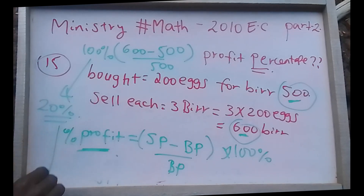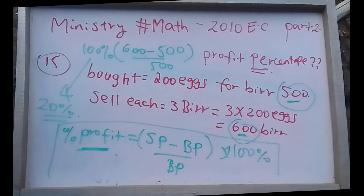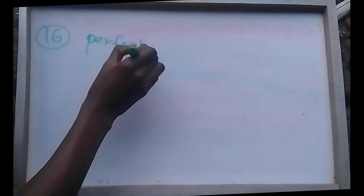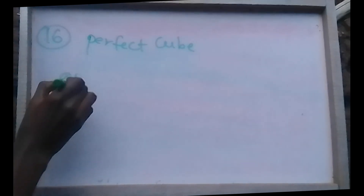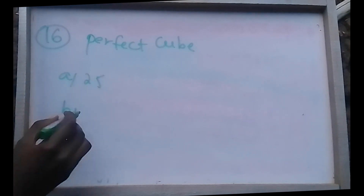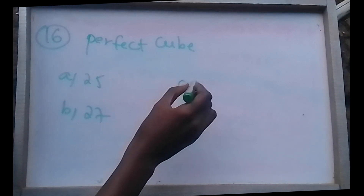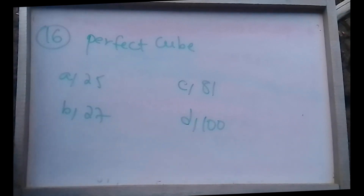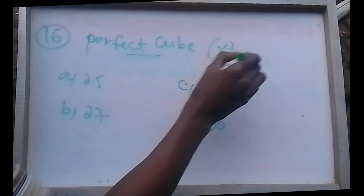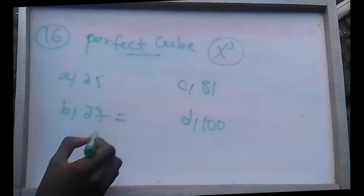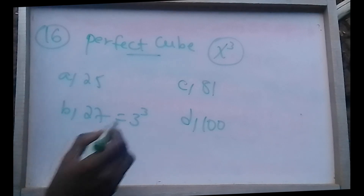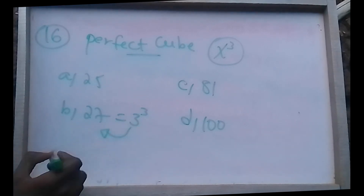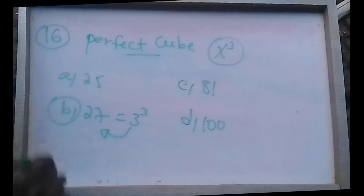Which one of the following is a perfect cube? The options are 25, 27, 81, and 100. A perfect cube means a number equals some integer cubed. 3 cubed equals 27, so the answer is B — 27.